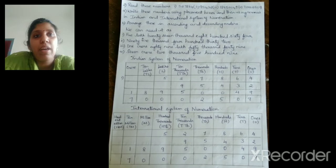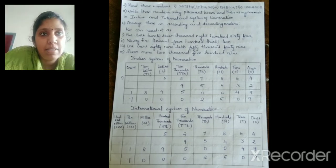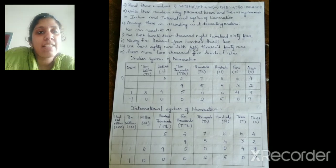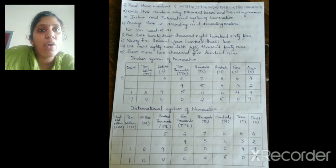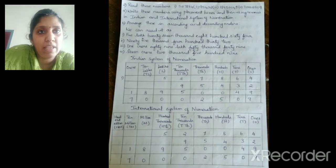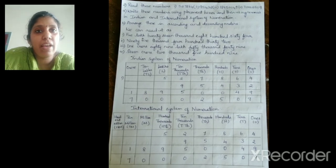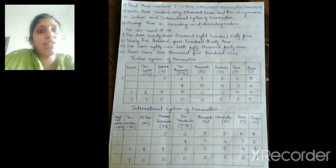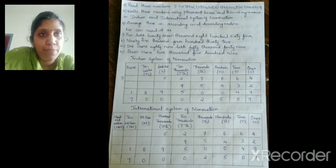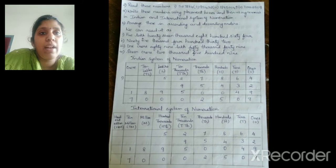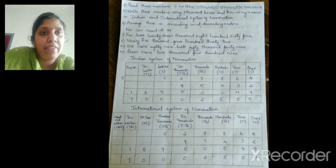Now look at the next sum. Read these numbers — four different numbers are given. Write them using placement boxes and then using commas in Indian and international system of numeration. Arrange these in ascending and descending order. The first number is 5,27,864. The next is 95,432. Then 1 crore 89,50,049. And then 7 crore 2,509.